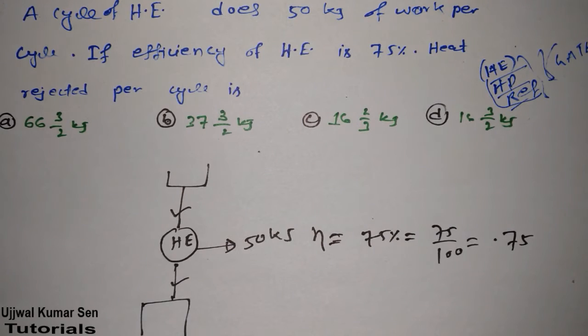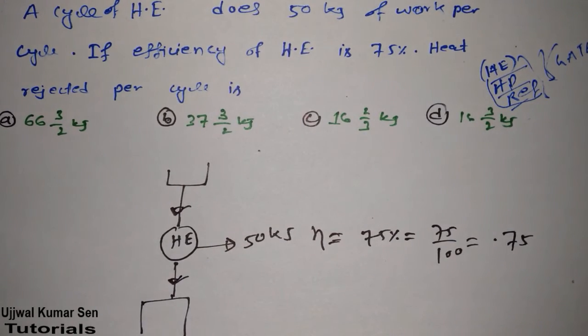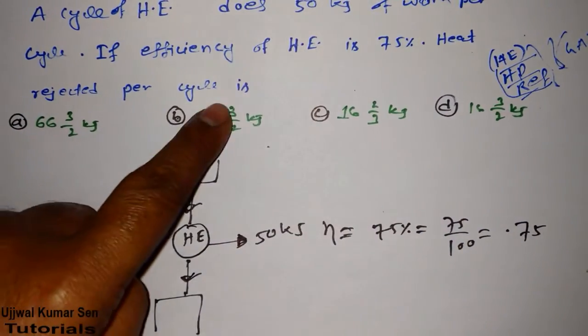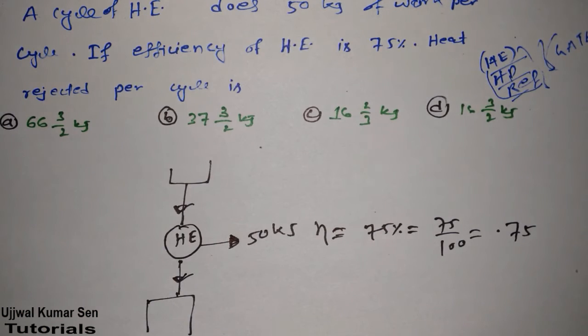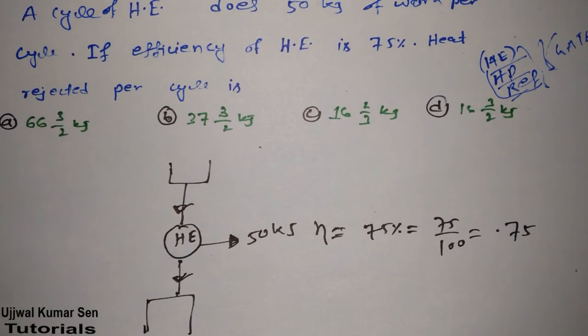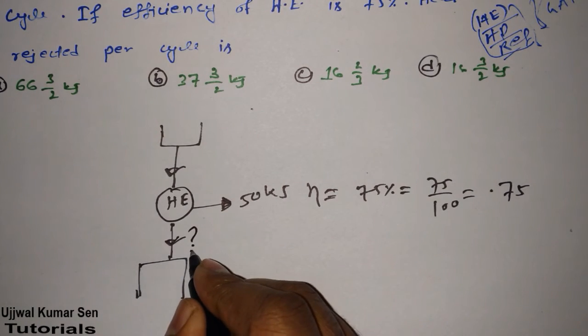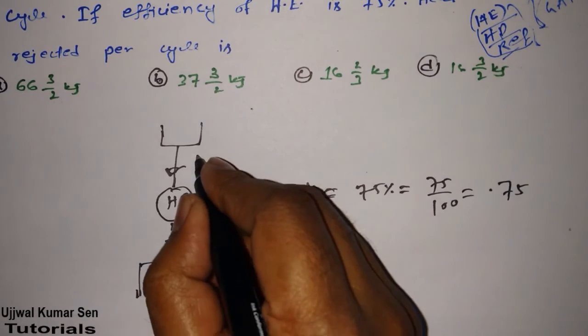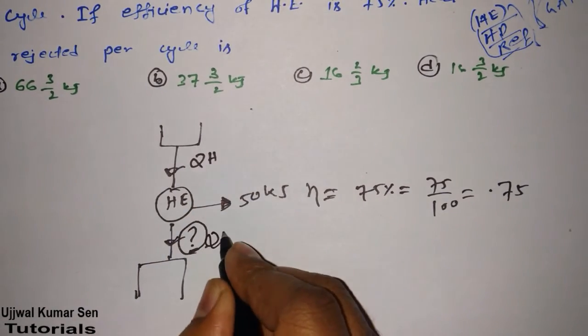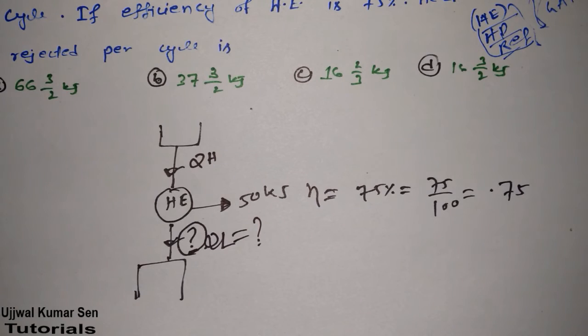Let's talk about the other thing that is here only. We have to find out heat rejected per cycle. How the heat is rejecting per cycle, that is important. We need to find out that. Heat rejected per cycle means how much heat is rejecting per cycle. Let's say, this is QH and this is QL. We have to find out QL according to the question.